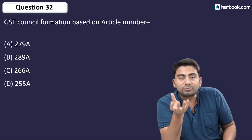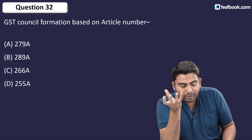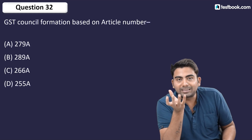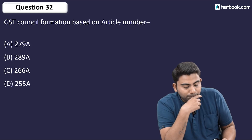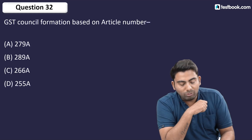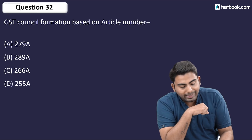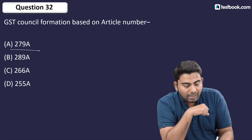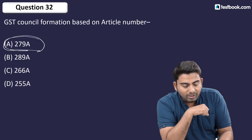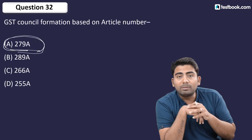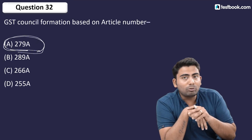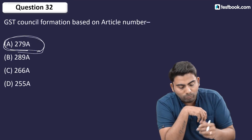Question number 32: GST Council formation is based on which article number? The answer is Article 279A — option A. If you have watched our videos, this answer should be familiar.